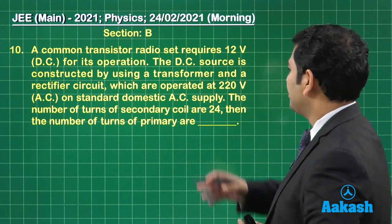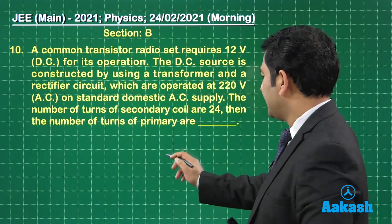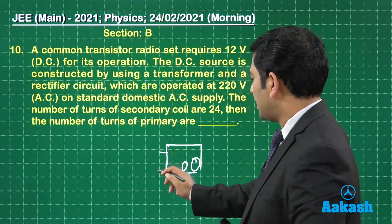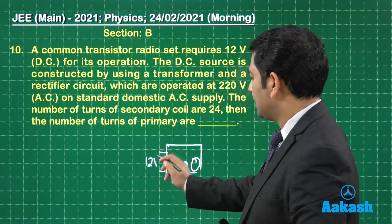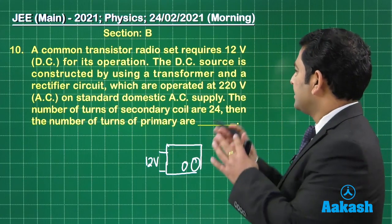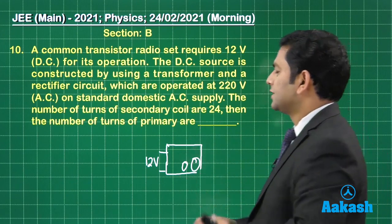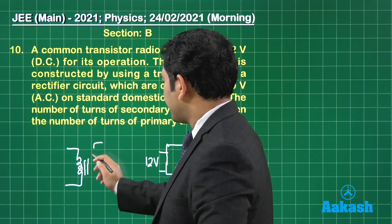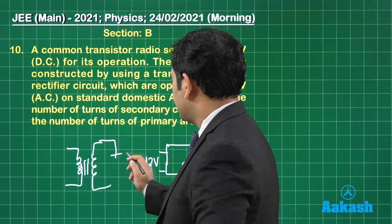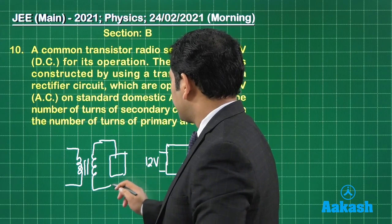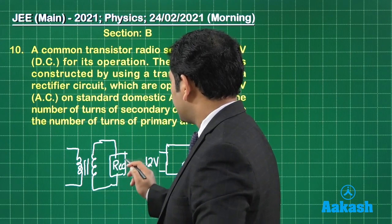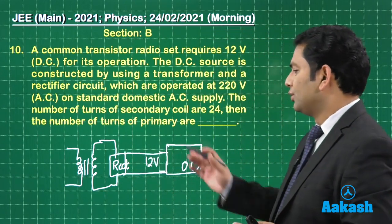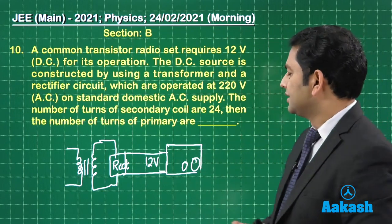Now, what does it say? A common transistor radio set requires a 12-volt. So, here is the radio. This is your radio set and it requires a 12-volt. Now, the DC source is constructed by using a transformer and a rectifier circuit. So, here is the game, the transformer is there and then you have the rectifier. So, this is the rectifier and that eventually by using a filter circuit, a 12-volt output DC is produced.